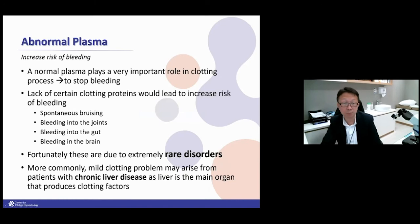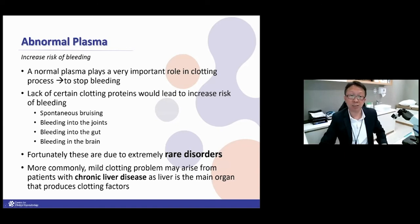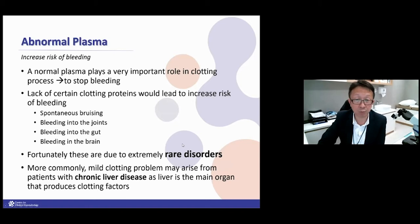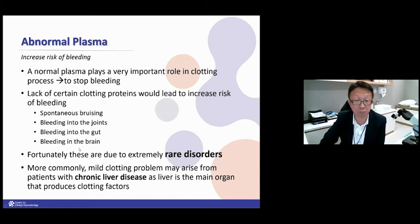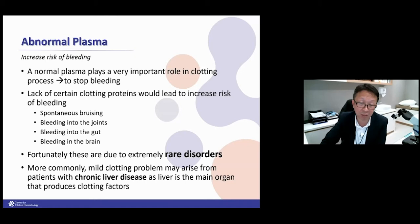Clexane is an injection; the others are all oral medications. The other problem when you have a plasma issue is an increased risk of bleeding. One of the major proteins in the blood is clotting factors. If you lack these clotting factors, you can have spontaneous bruising, bleeding into the joint, bleeding into the gut, or worse still bleeding into the brain, causing sudden death. Fortunately, clotting deficiency is quite rare. The common form is due to chronic liver disease.